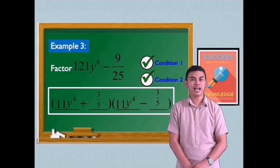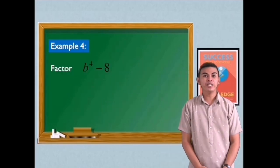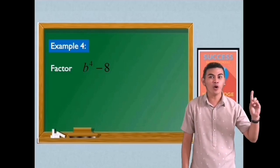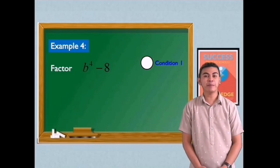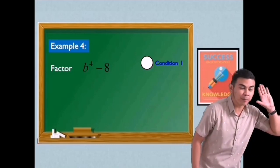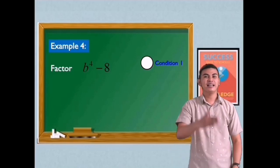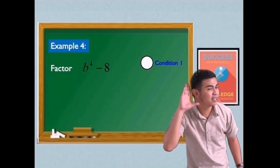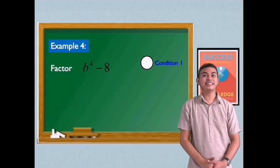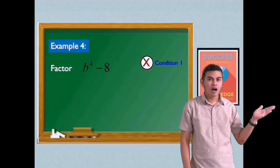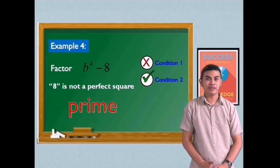Let's have the fourth example. Factor b to the 4th minus 8. Let us see if all the conditions will be satisfied. First condition — each term must be a perfect square. Is b to the 4th a perfect square? Yes, it is a perfect square. How about 8? No, it's not a perfect square. So since one of the conditions is not satisfied, we can say that b to the 4th minus 8 is not factorable as a difference of two squares.